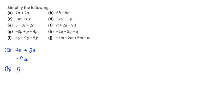Part b: 5b minus 8b. So 5 minus 8 — I would have negative 3b left after that.